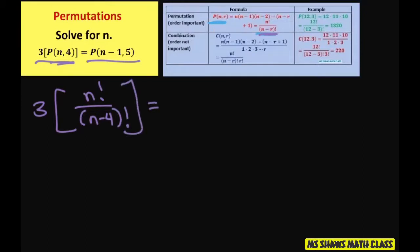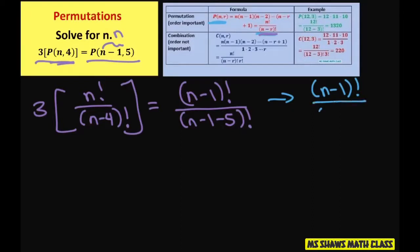And then this side, we get the numerator is n minus 1 factorial. So the denominator, remember this is our n. So we're going to write n minus 1 minus 5 factorial. This ends up being n minus 1 factorial, and the denominator ends up being n minus 6 factorial.